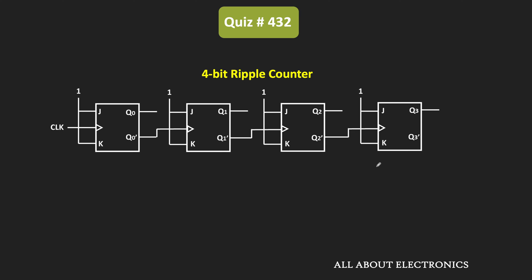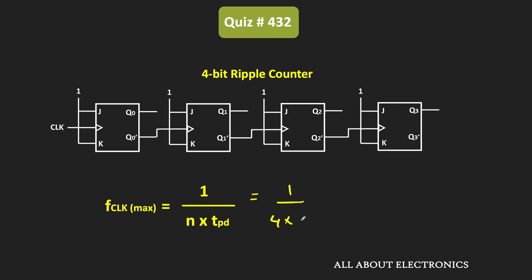Because of that, for this ripple counter, the overall propagation delay is equal to n times TPD, where n is the number of flip-flops in the counter. So the maximum operating clock frequency is equal to 1 divided by n times TPD. In this case, n is equal to 4 and the propagation delay of each flip-flop is 20 ns. That means F_clock_max is equal to 1 divided by 80 ns, which equals 12.5 MHz.